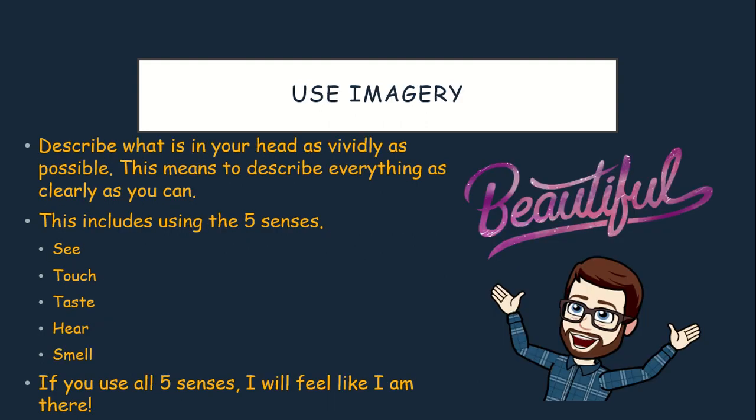You can use imagery as well. Describe what is in your head as vividly as possible — this means describing everything as clearly as you can. Use the five senses: see, touch, taste, hear, and smell. When you use all five senses, you'll make the reader feel like they're really there.